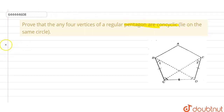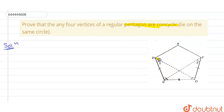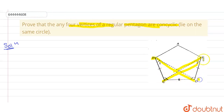If I write the solution here, you guys can clearly see this figure. This is my regular pentagon. I've drawn two diagonals: the first one is BD, and the other one is CE. Considering these four points — I'm using points B, C, D, and E, as required by the question.